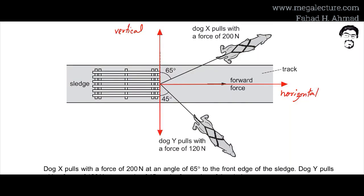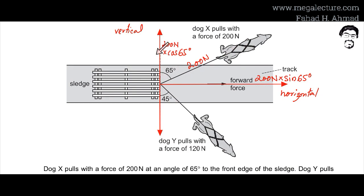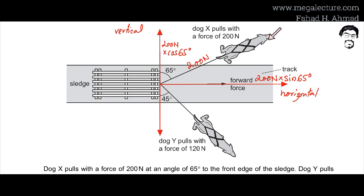To solve this, we resolve the two forces into horizontal and vertical components. The vertical component of the 200 N force is 200 × cos(65°), and the horizontal component is 200 × sin(65°). These are the two components of the 200 N force.